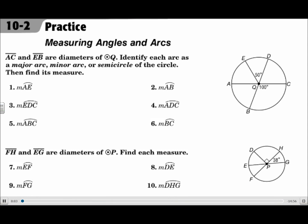This is lesson 10.2, Measuring Angles and Arcs. The objectives are to identify central angles, major arcs, minor arcs, and semicircles and find their measures, and to find arc lengths.